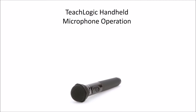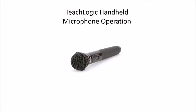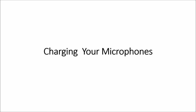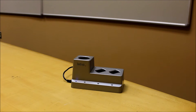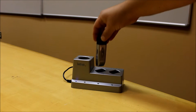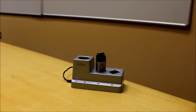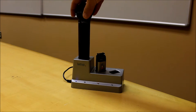Your handheld microphone features a sliding power switch to turn the microphone on and off. To charge your microphones, use the supplied charger. Place the microphone in the correct slot and make sure that it is firmly seated. When the microphone is charging, the status light on the microphone and the charger will be red. When charging is complete, the lights will turn green.